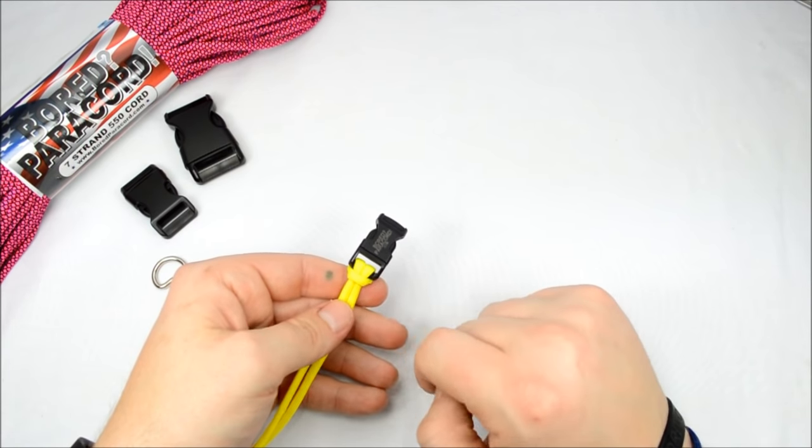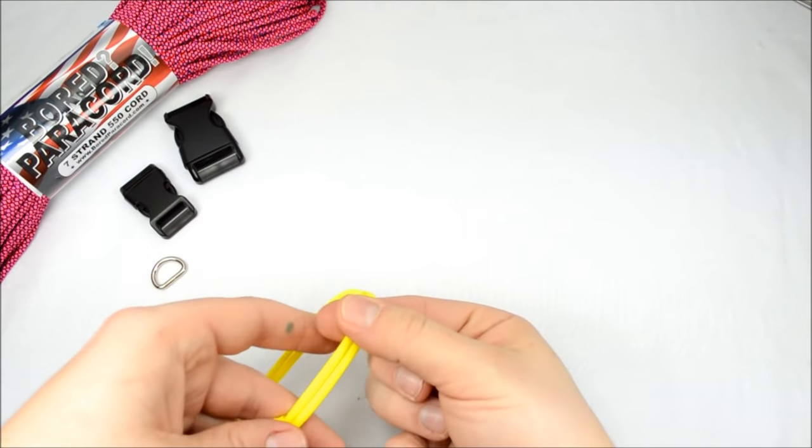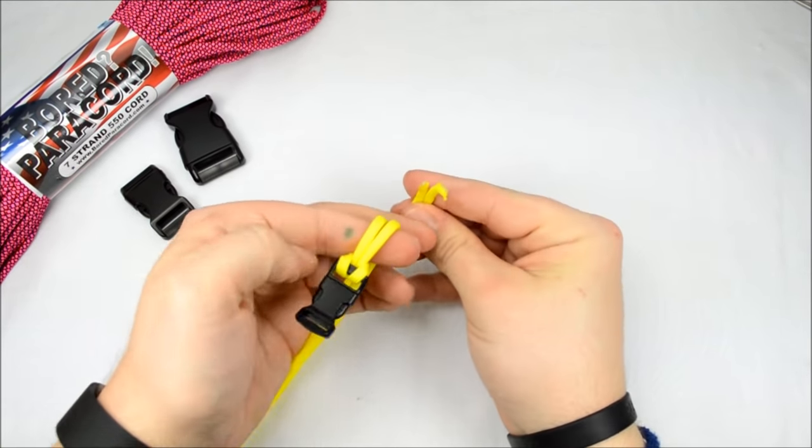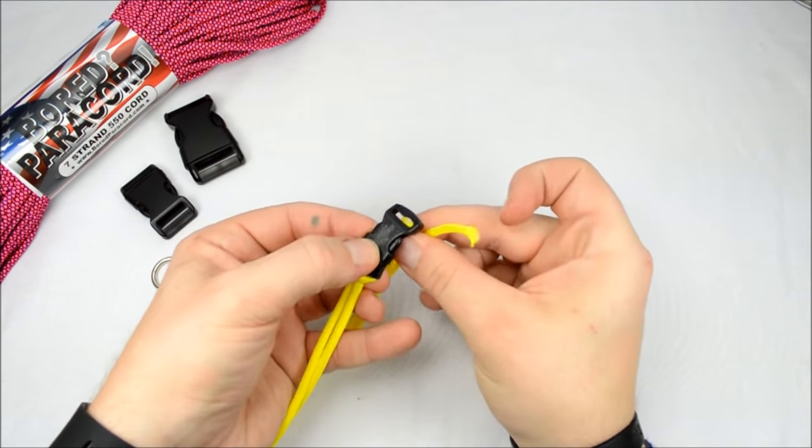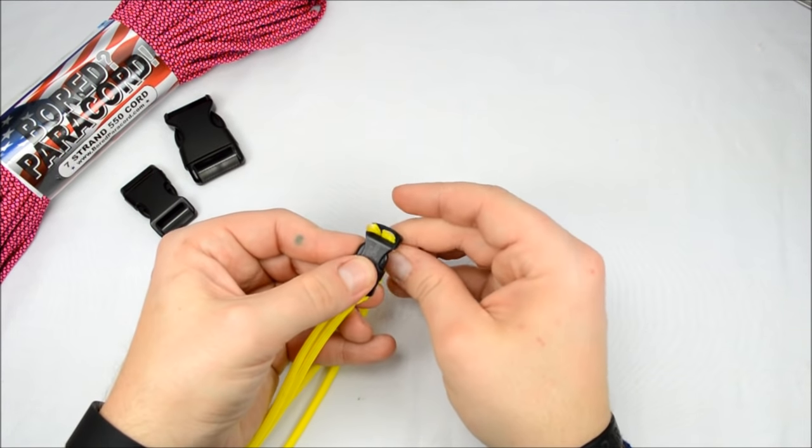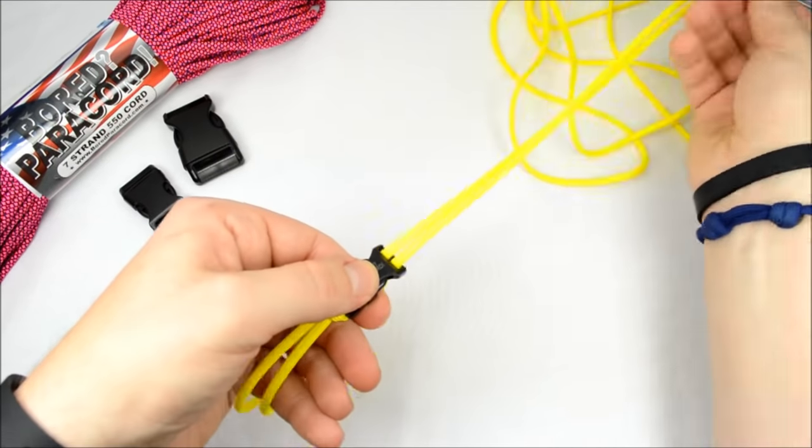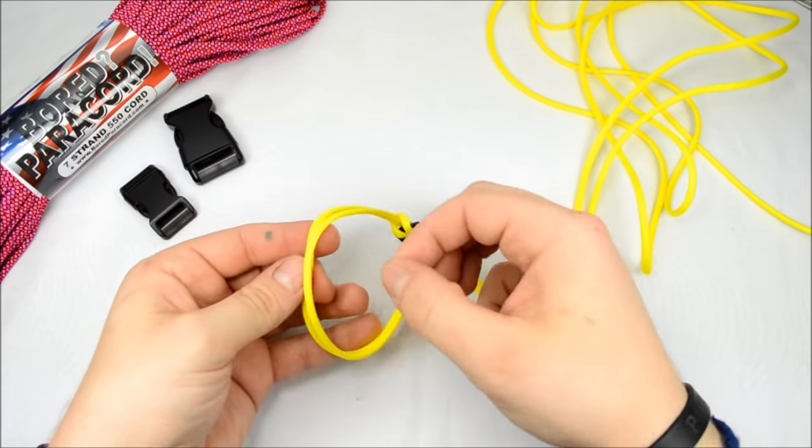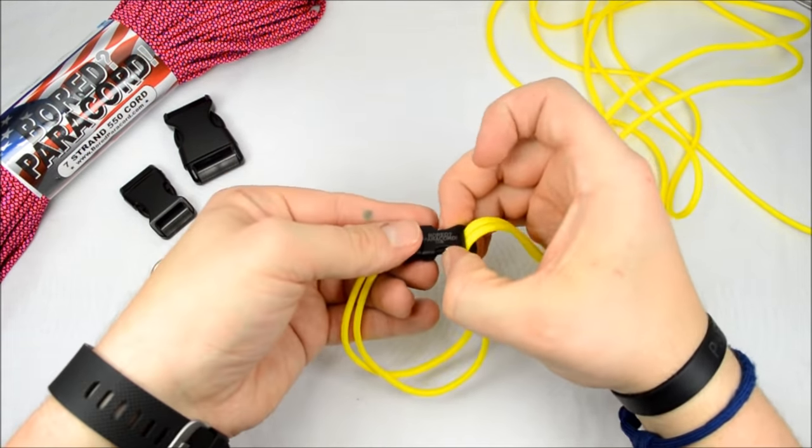Alright, so once you get your cow's hitch on one end, you're just going to flip your buckle over. Again, pull the paracord through. And then we're going to flip the buckle back over. And from the back side of the buckle, you're going to come up through to the top of the buckle. Just like that. And pull all your excess through. And then open your buckle. So you're going to end up with a loop here. You're actually going to have two loops.